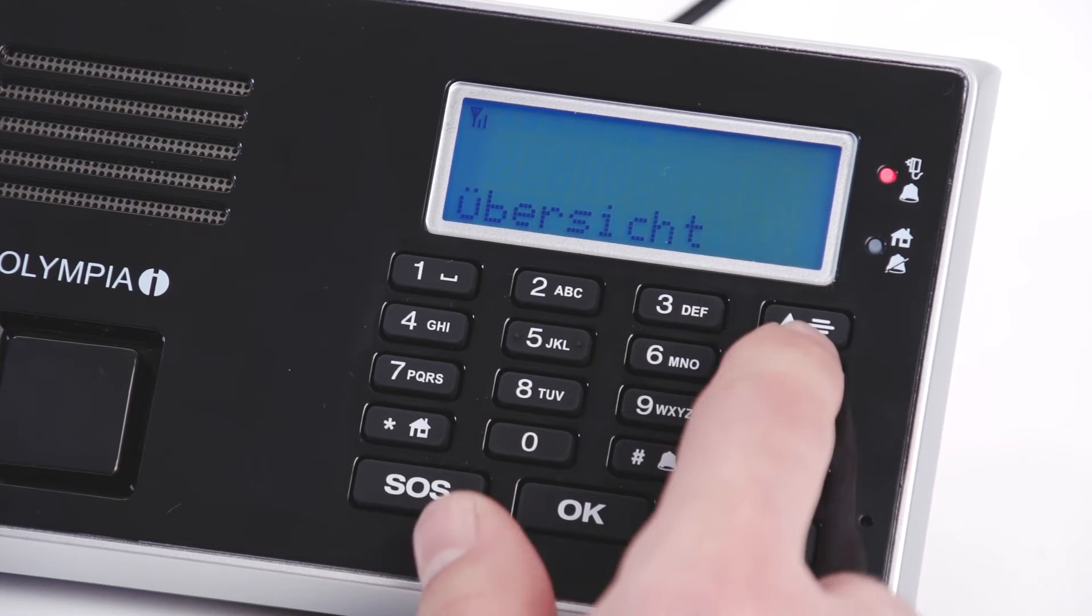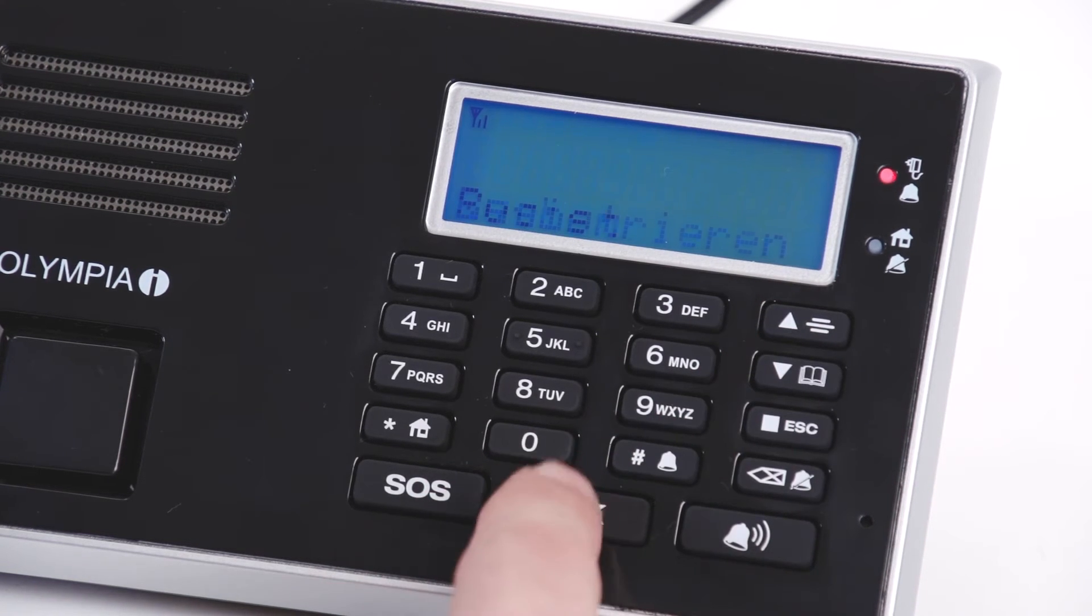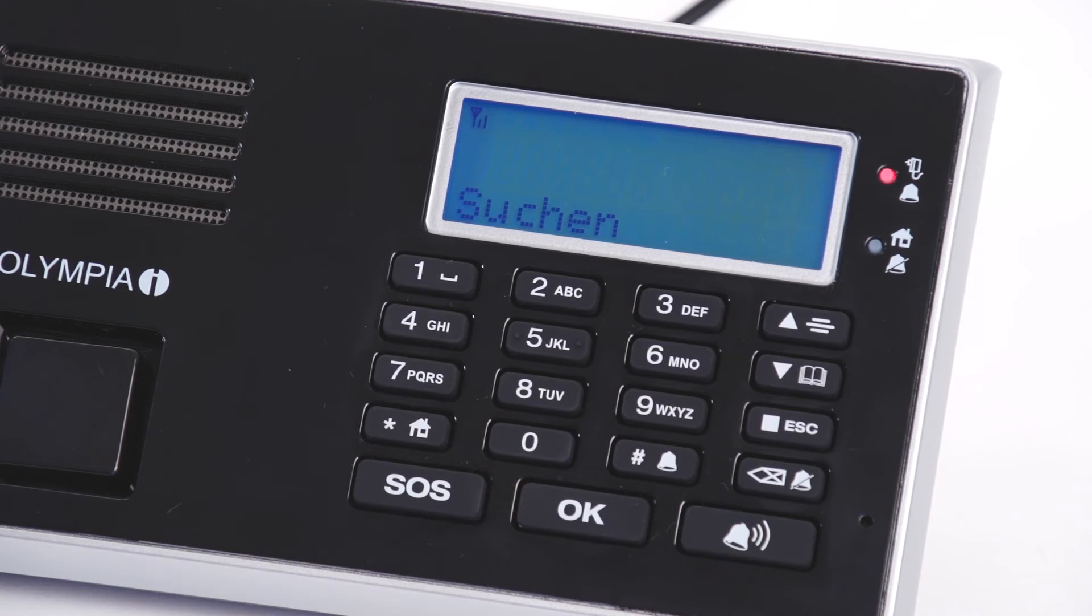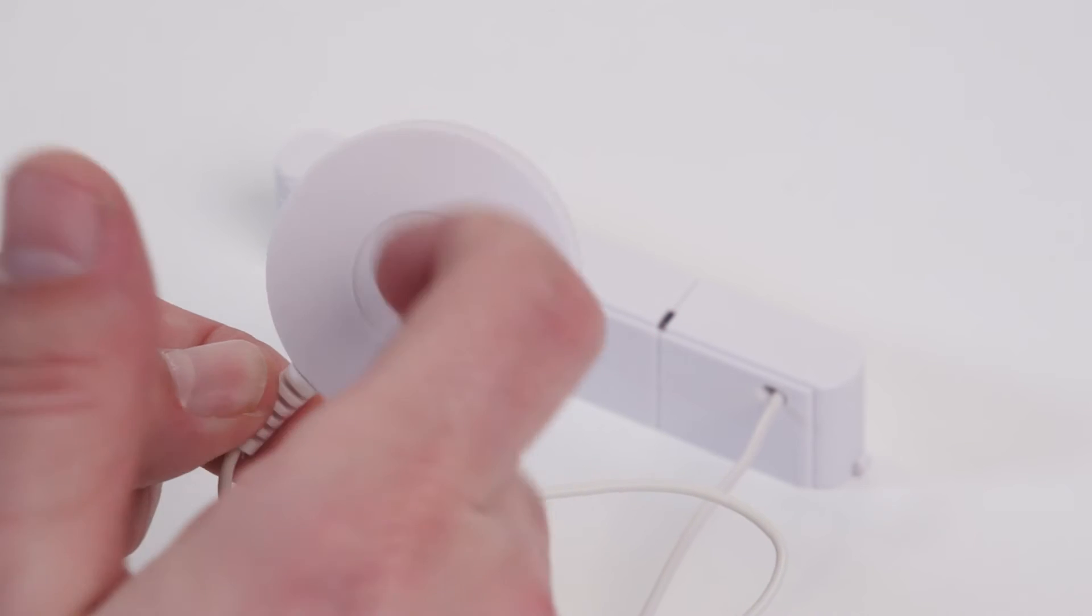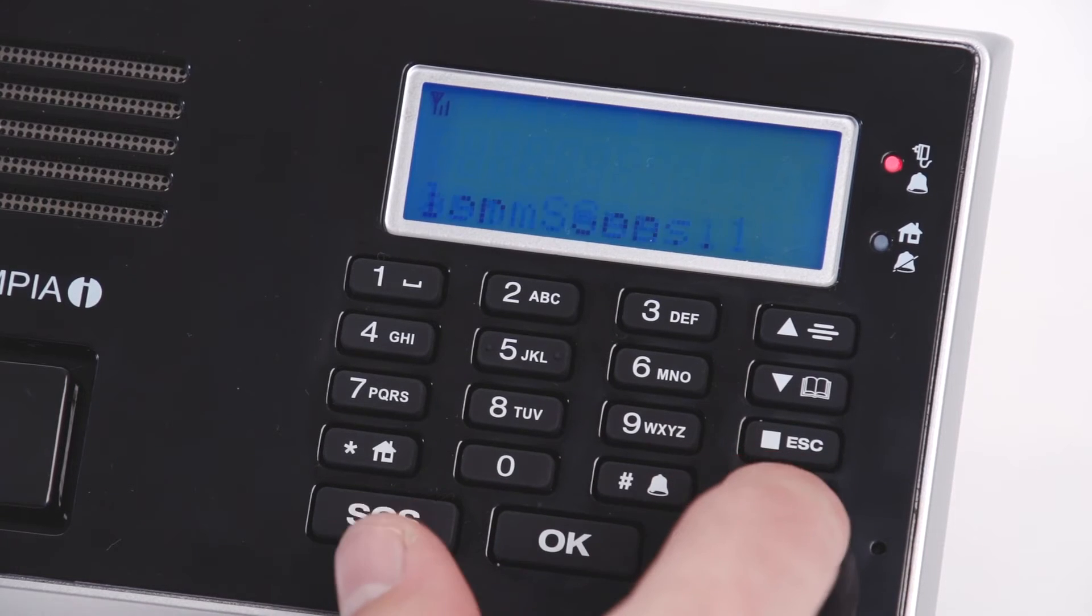To register the sensor on the base unit, select the register menu option and press the ok button. Softly tap the sensor. The sensor is now displayed on the base unit.